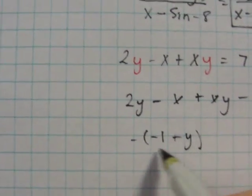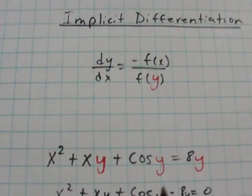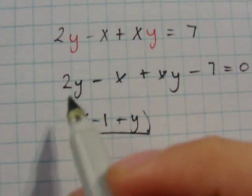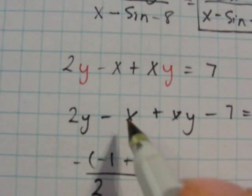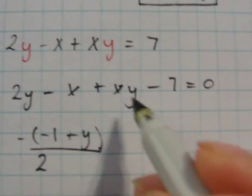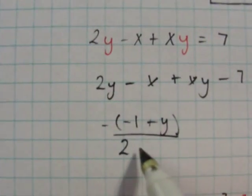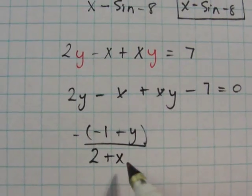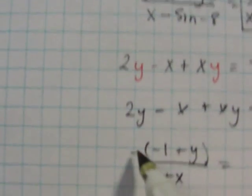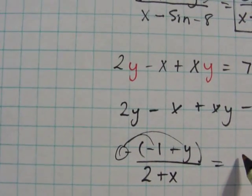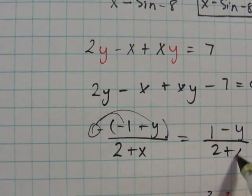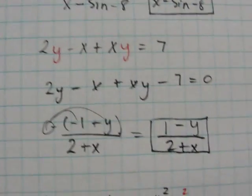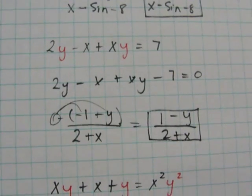Now you're going to the bottom which is your f of y, so anywhere there's a y you're going to take the derivative. Derivative of 2y is 2. There's no y in the x term. There's a y in xy so you take the derivative of xy which is just x, so it's plus x. There's no y in the constant terms. Then you distribute your negative and you get 1 minus y over 2 plus x. There's your answer. I love this shortcut because it's short and sweet, very organized, and simple.